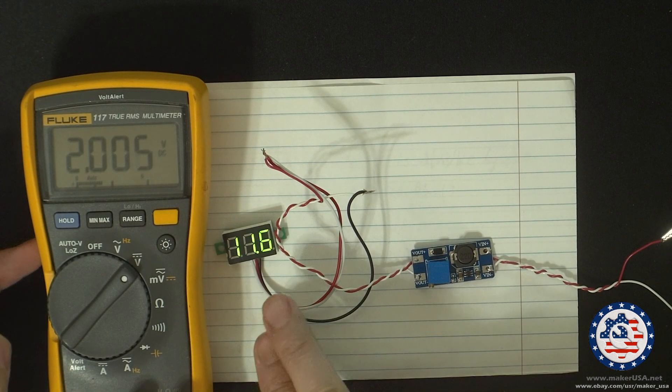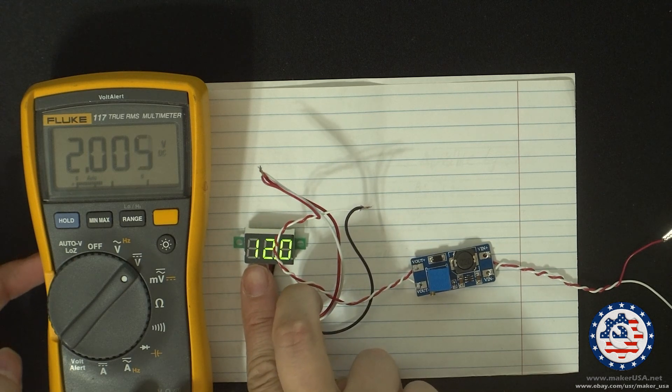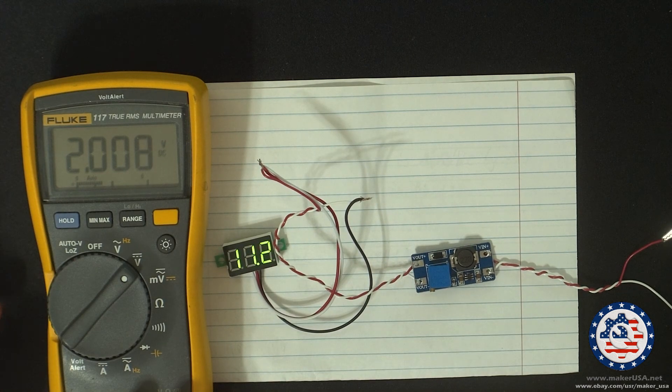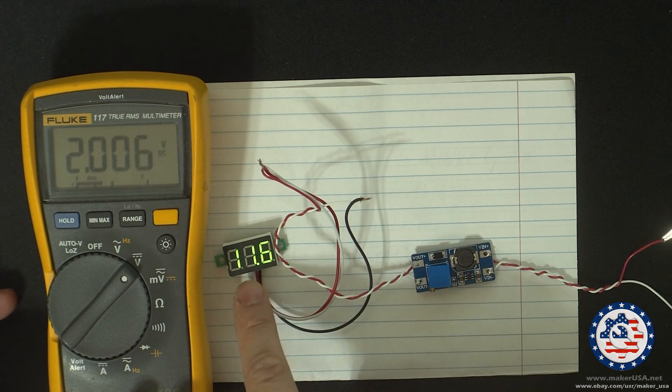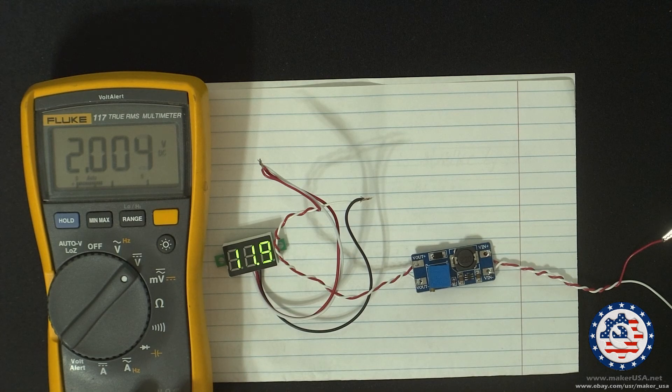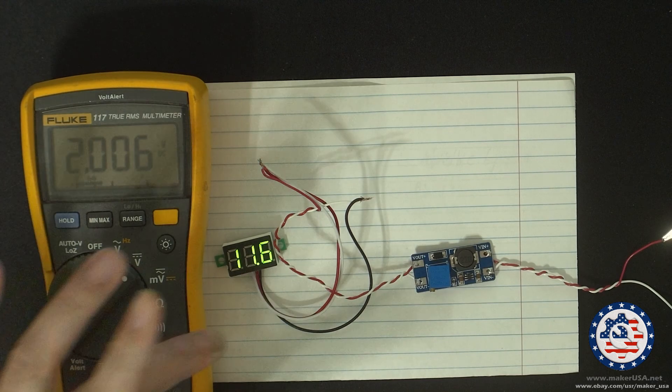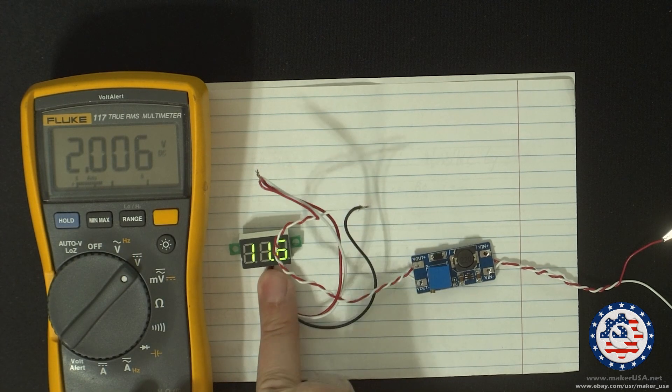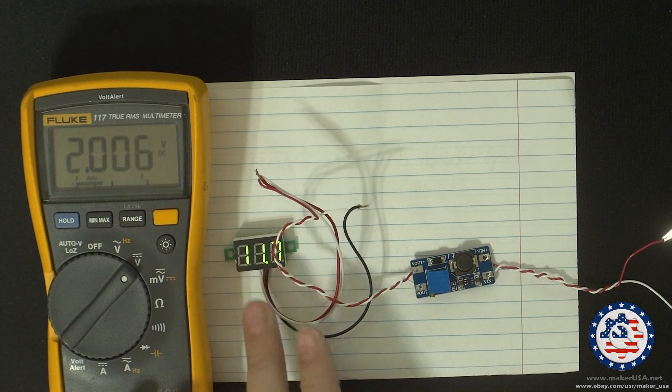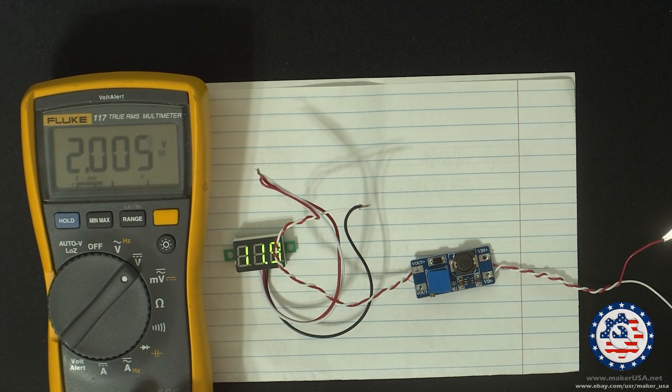So the input voltage is 2 volts, putting out about 11.9 to 12 volts. This is kind of pushing the envelope with this module, so we're still getting about 11 volts. And remember, we have no load on it. So the voltage will drop a bit once you have some load on the circuit.